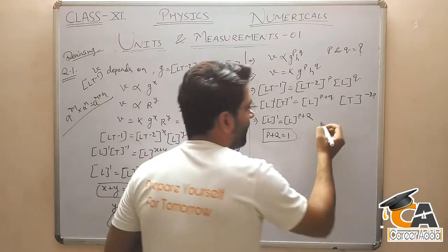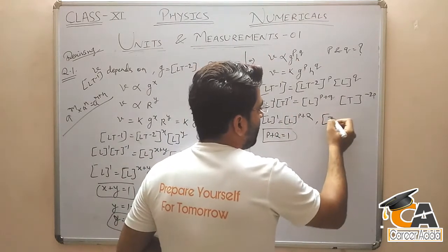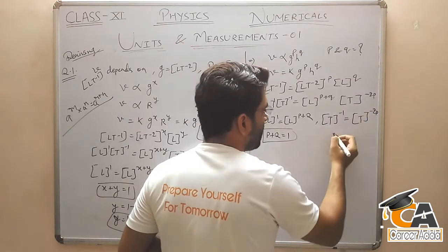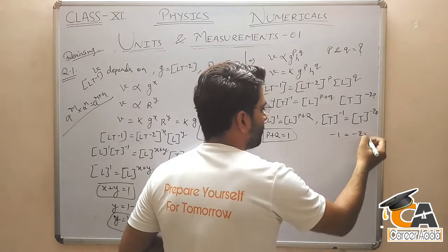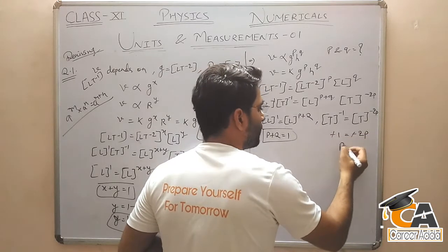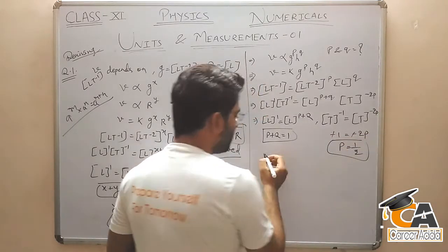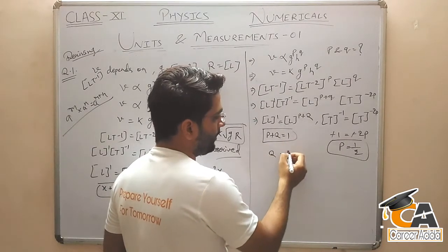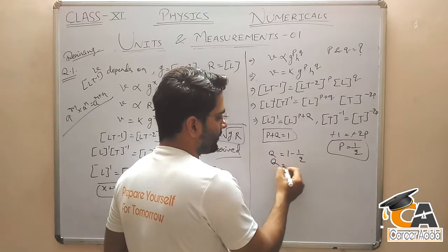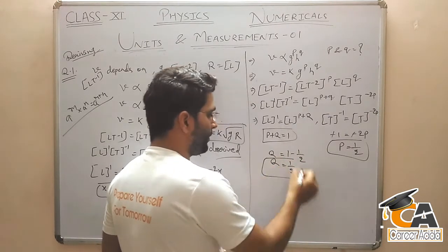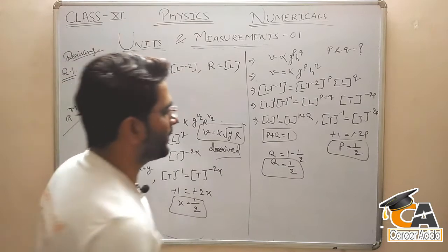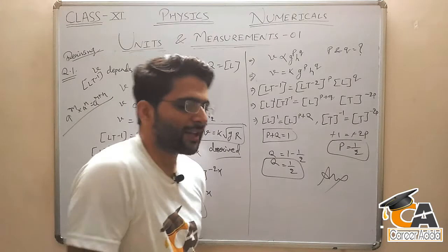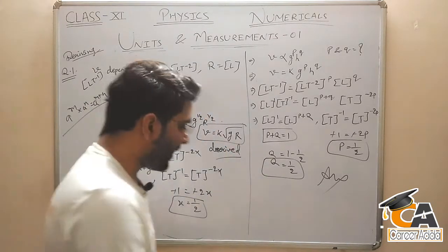T to the power minus 1 is equal to T to the power minus 2P. Minus 1 is equal to minus 2P, minus-minus cancel out, so P is equal to 1 by 2. यहाँ पे put करेंगे तो Q is equal to 1 minus 1 by 2, that is Q is equal to 1 by 2. यह हमारा answer हो गया।